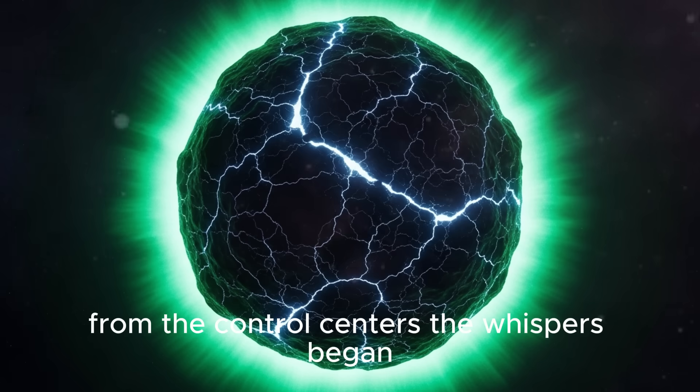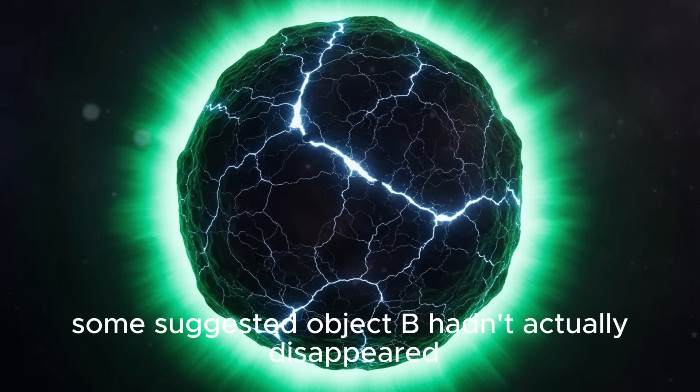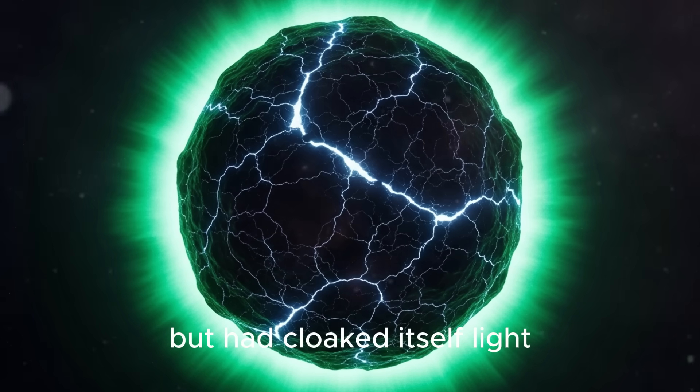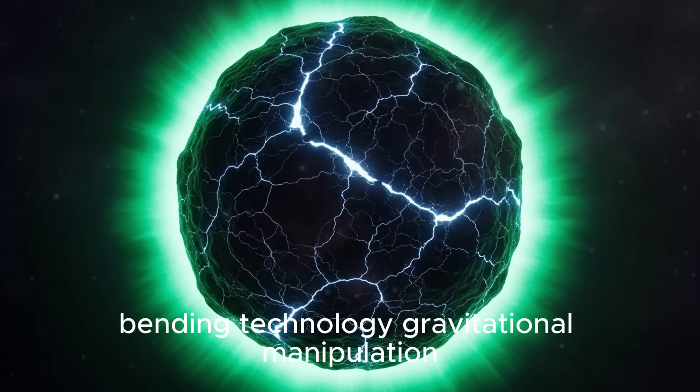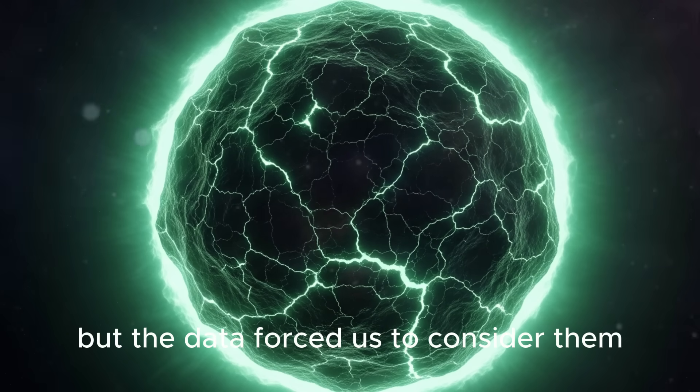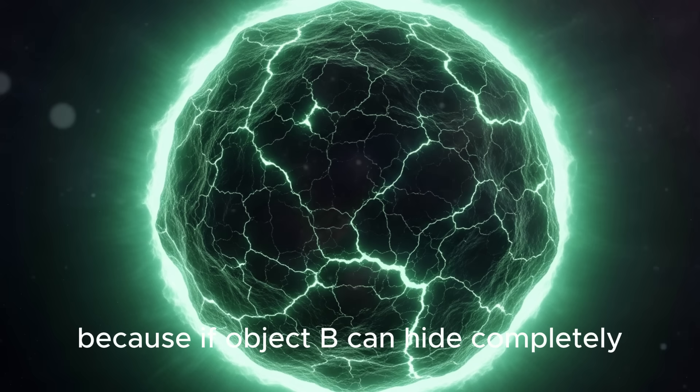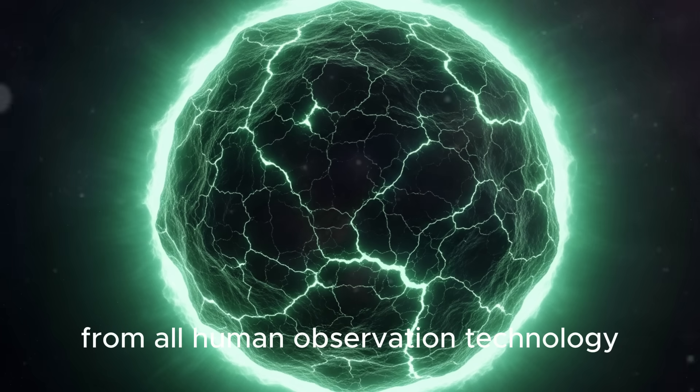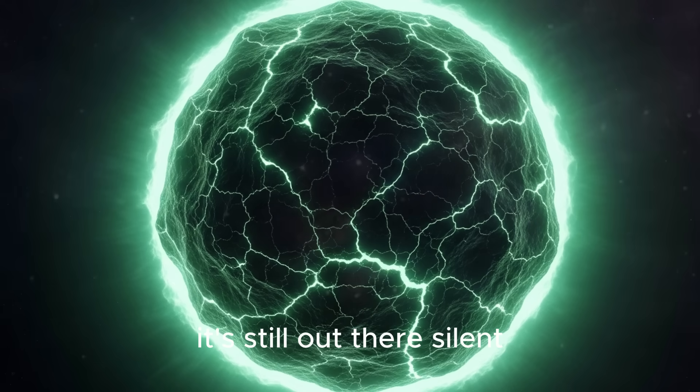From the control centers, whispers began. Some suggested Object B hadn't actually disappeared but had cloaked itself - light bending technology, gravitational manipulation, even dimensional phase shifting. If Object B can hide completely from all human observation technology, it's still out there - silent, invisible, possibly watching.